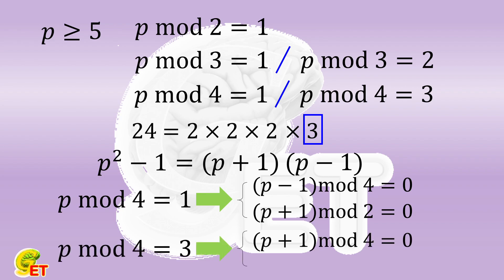If the remainder is 3, then p plus 1 is divisible by 4 and p minus 1 is divisible by 2. So in any case, the square of p minus 1 always has 3 factors of 2.